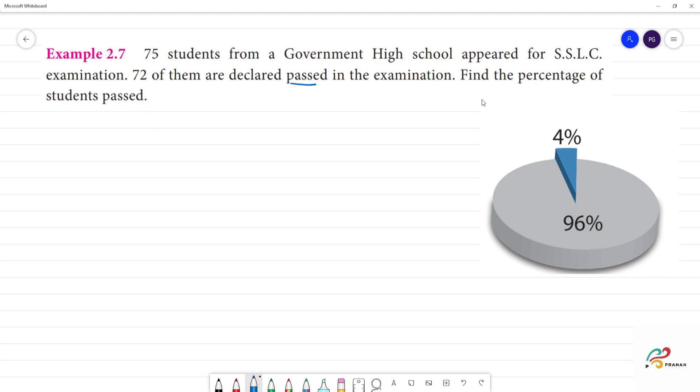SSLC, secondary school leaving certificate. That's when we start secondary school, plus one and plus two go on. That's what we say, senior secondary school.